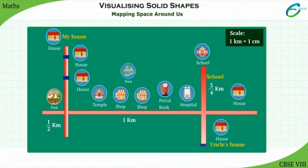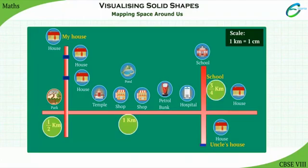Observe that on this map, the distance is denoted by 1 cm or 1 mm. These distances shown on the map are proportional to the actual distances on the ground. Maps do this with the help of a special idea called the scale.